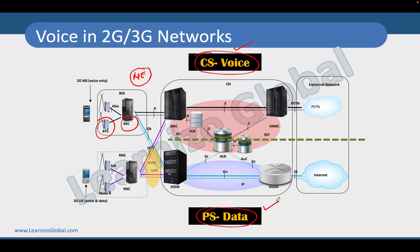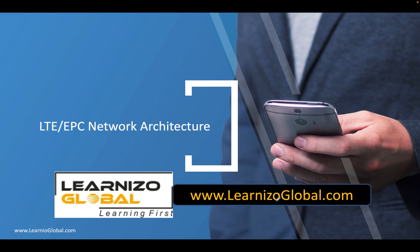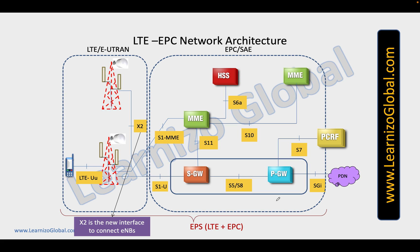However, when we moved from 2G and 3G to 4G network, a few things changed. We moved from circuit switching to only packet switching network. So in 4G, we only have a packet switching network, but more or less the scenario was the same, because most of the network elements like MME, HSS, SGW, or PGW were mostly built on purpose-built hardware. The hardware and software for these network elements still came from the same vendor.